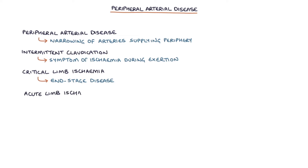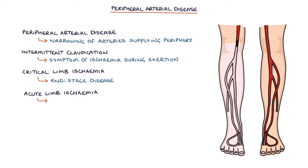Acute limb ischemia refers to a rapid onset of ischemia in a limb. Typically, this is due to a thrombus or a clot blocking the arterial supply of a distal limb, similar to a thrombus blocking a coronary artery in a myocardial infarction.